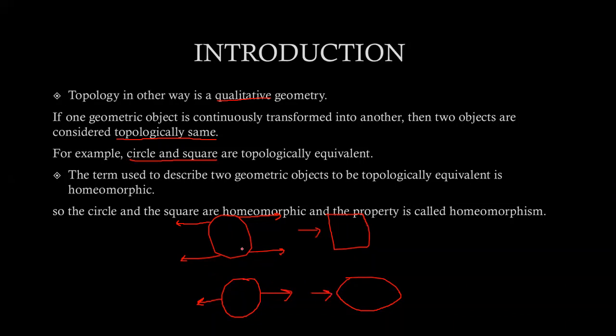So these two objects that are topologically the same are said to be homeomorphic. This is the condition of homeomorphism: that two objects that are topologically the same are said to be homeomorphic. That is all about our lecture.